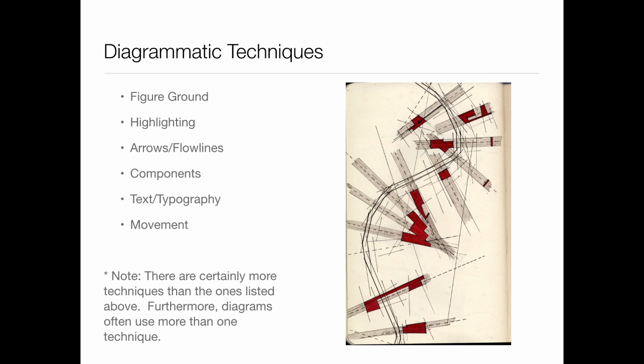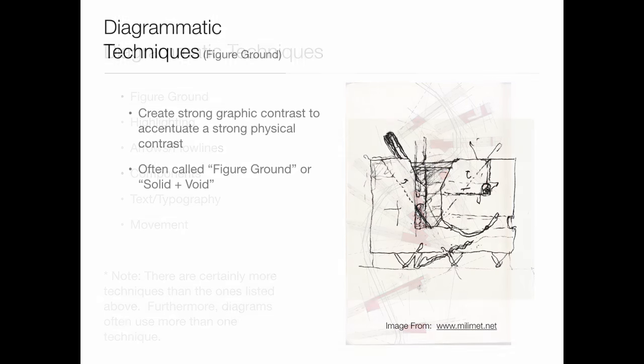We're going to talk about figure-ground, then highlighting which is color coding, then arrows and flow lines, highlighting building components or pulling out pieces of a building, text and typographic diagrams which can be very effective, and finally movement through particular spaces and how we diagram those.